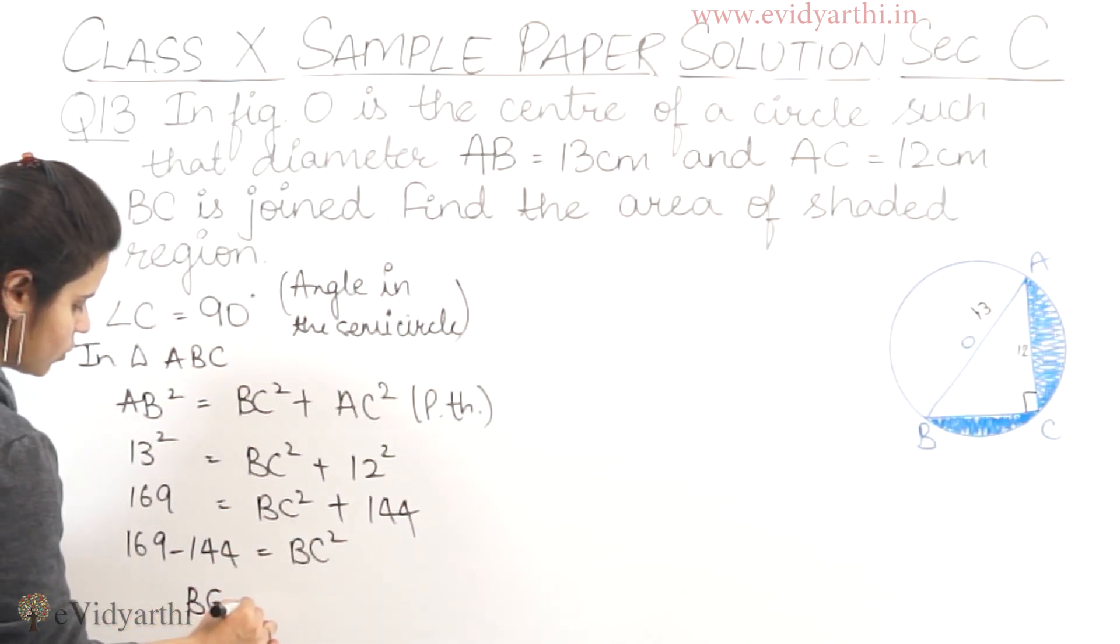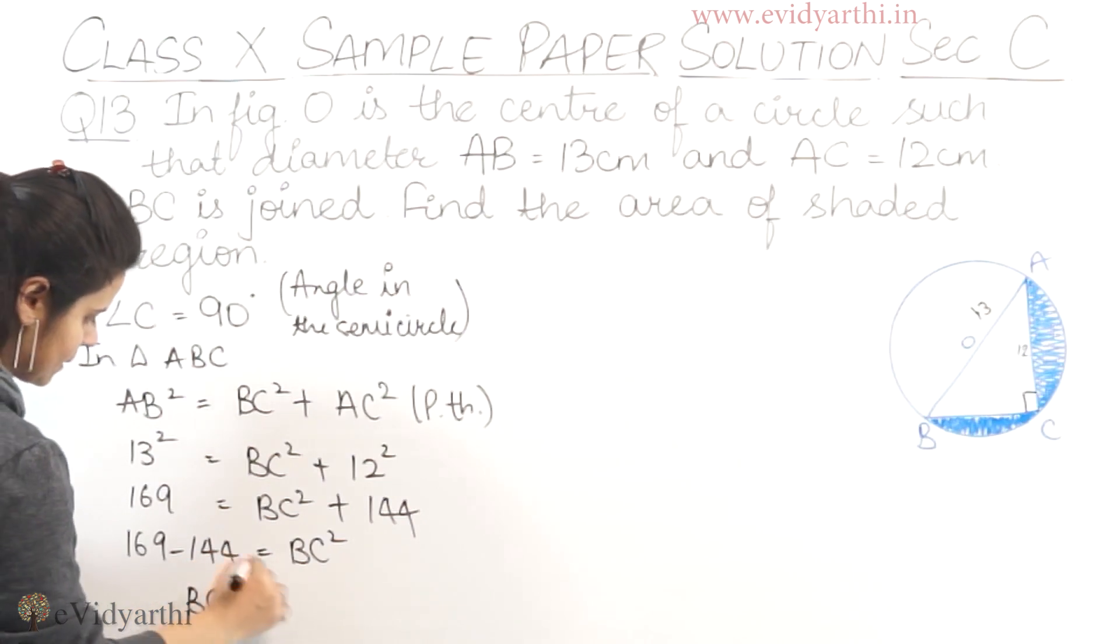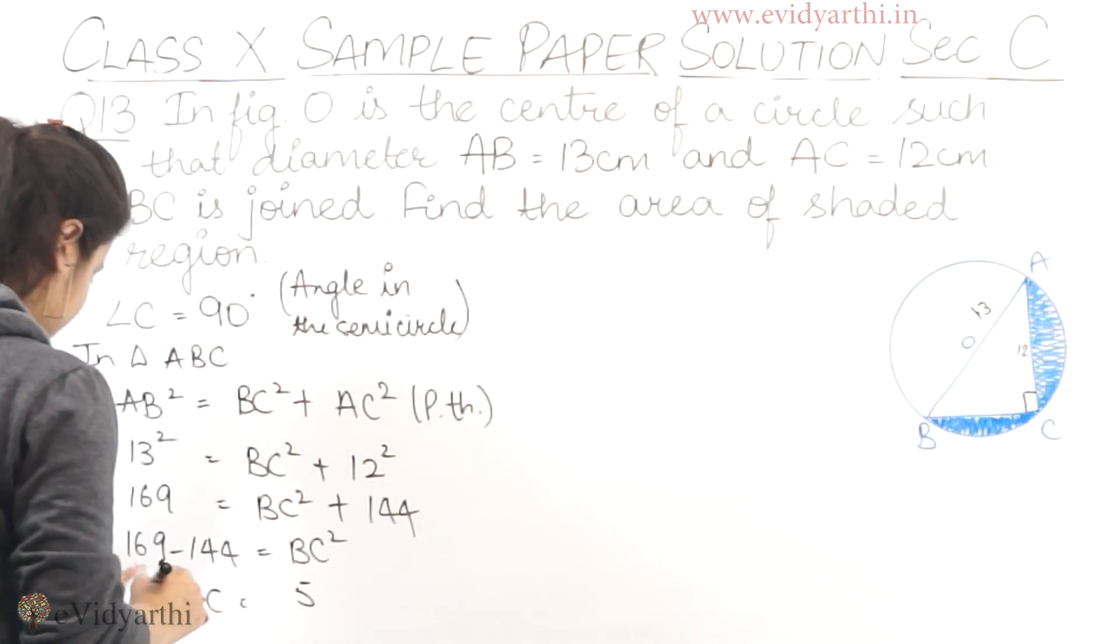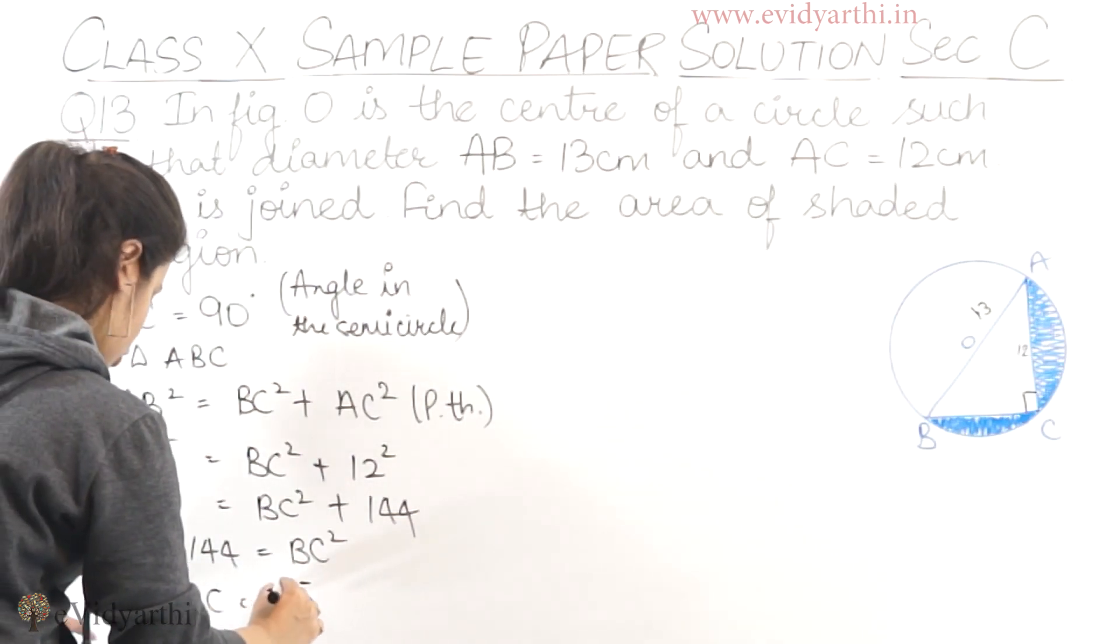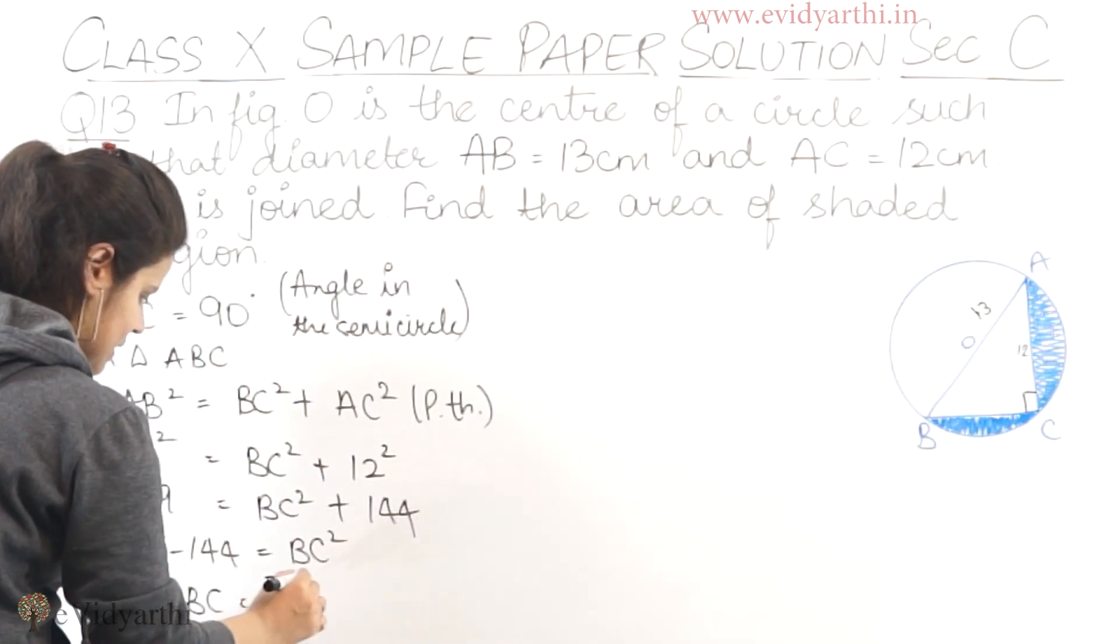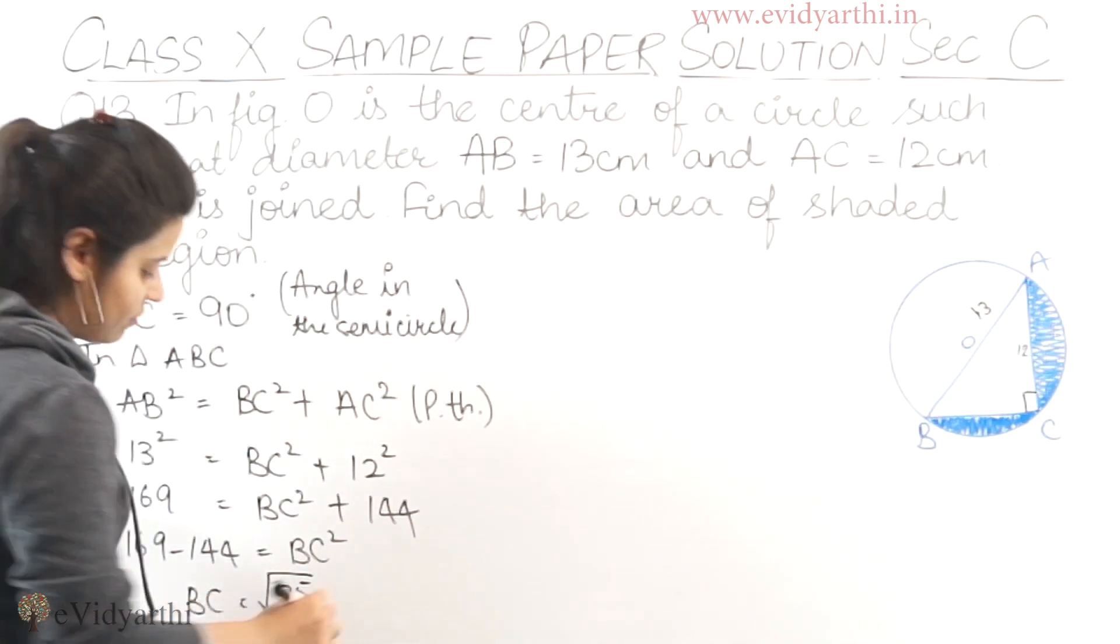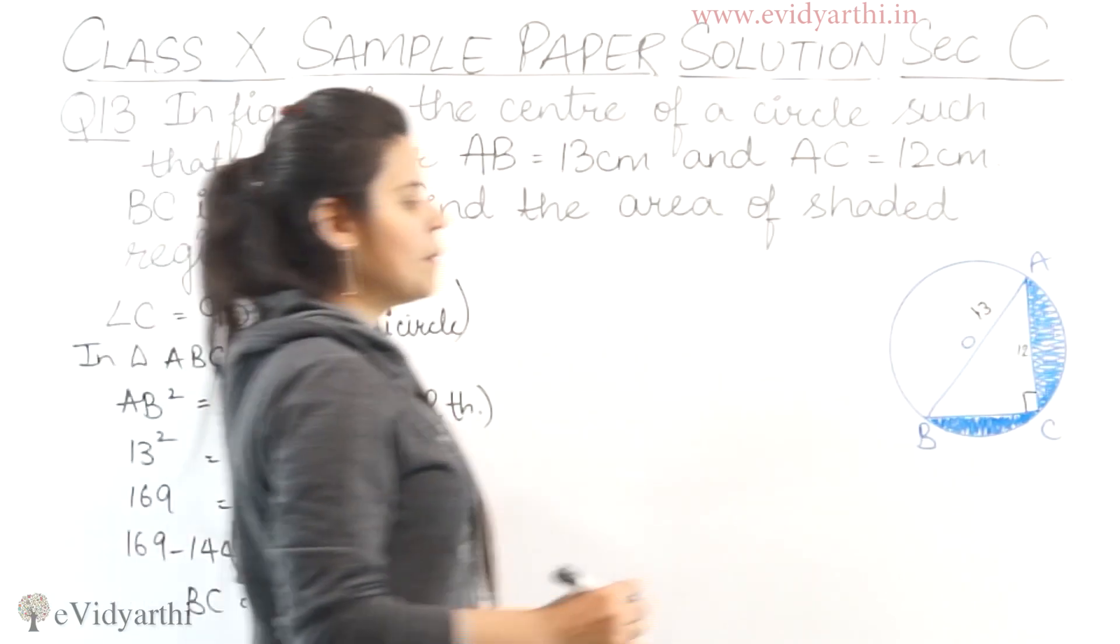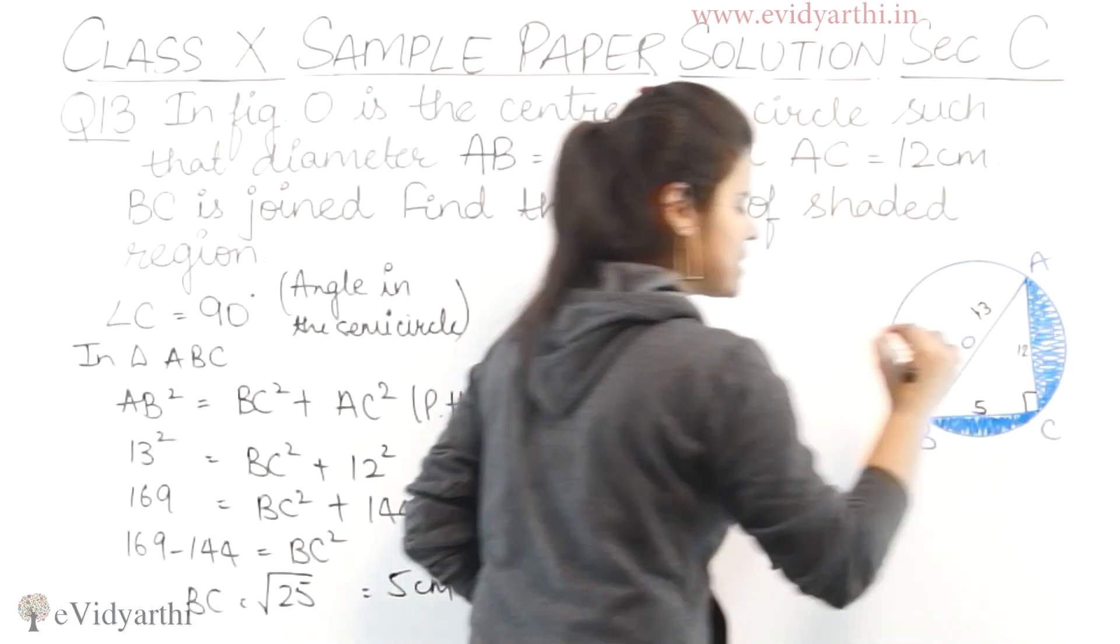We can write 169 minus 144 equals BC². This gives us BC² = 25, so BC = √25 = 5 centimeters. Now we have BC's length, which is 5.